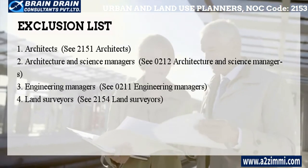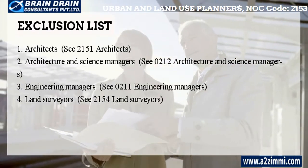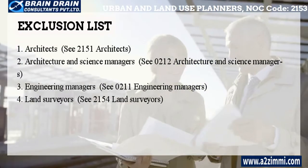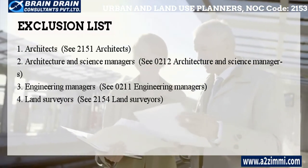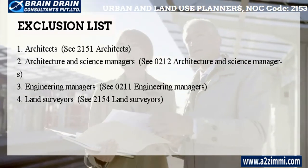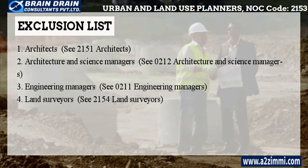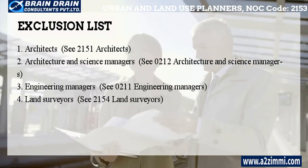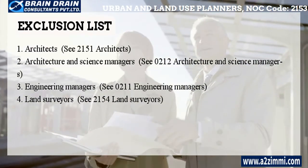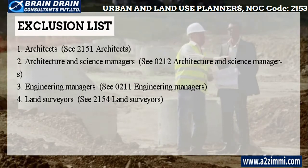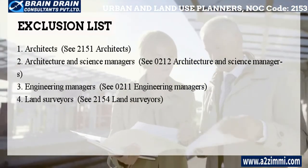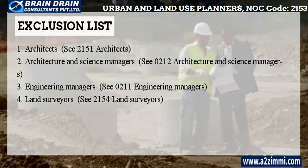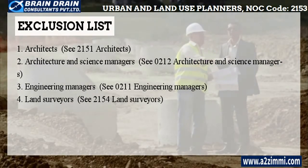The exclusion list — titles that cannot be covered under this profile — includes: Architects (NOC 2151), Architecture and Science Managers (NOC 0212), Engineering Managers (NOC 0211), and Land Surveyors (NOC 2154). This was all about the profile of Urban and Land-Use Planners with NOC code 2153.